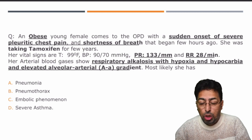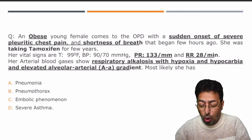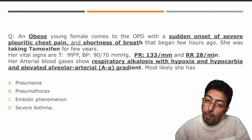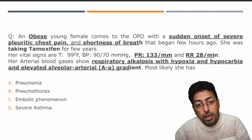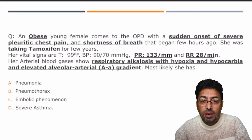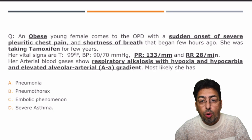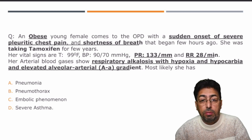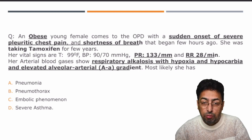The second option: pneumothorax. Pneumothorax will present with sudden onset of severe chest pain, not necessarily pleuritic type, with associated shortness of breath. There might be tachypnea and tachycardia, but the ABG will not show such lab values as here. There might be associated traumatic injury, or a history of chronic emphysematous condition of the lung.